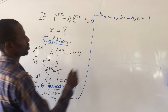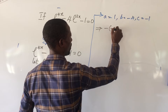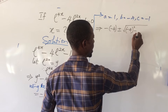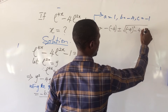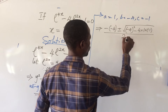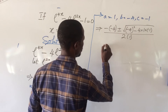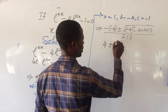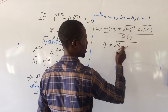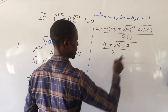Substituting these in, we get: minus of minus 4, plus or minus the square root of minus 4 squared minus 4 times 1 times minus 1, all over 2 times 1. Opening up the bracket, this gives us 4 plus or minus the square root of positive 16 minus minus 4, all over 2. So adding up inside the square root gives us 4 plus or minus the square root of 20, all over 2.